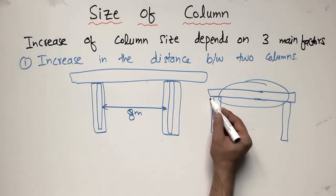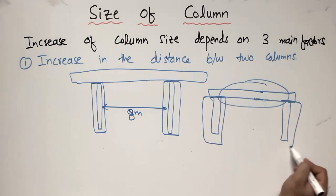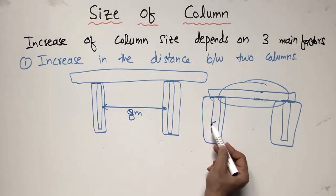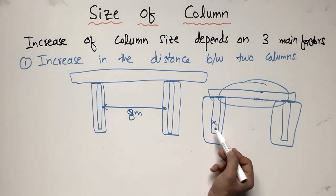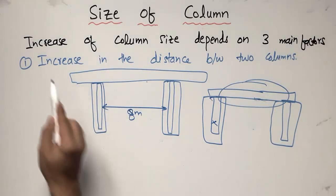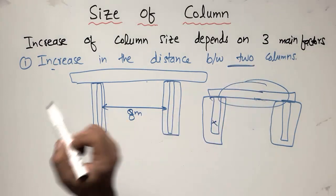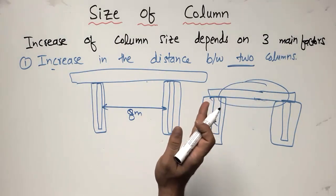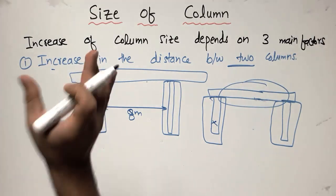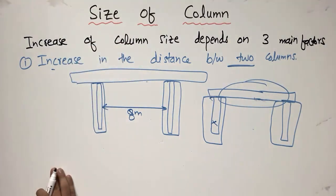If you increase the column distance, the more load of the beam acts on the column. You must increase the size or dimension of the column; otherwise the beam-column capacity will not be able to take the load. So the first reason to increase the size of the column is the increase in the distance between columns — you must increase the column dimension to take the load coming from the beams.